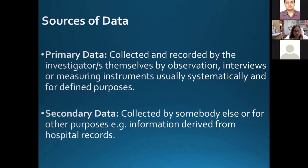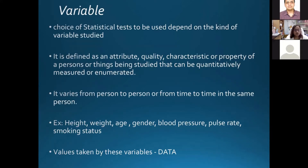Now, what do we mean by a variable? As the name suggests, it varies from person to person or from time to time in the same person. It is defined as an attribute, quality, or characteristic of a person or thing under study which can be quantitatively measured or enumerated. The values taken by these variables are called data — like height, weight, age are variables, while 154 centimeters is the data derived from the variable height.